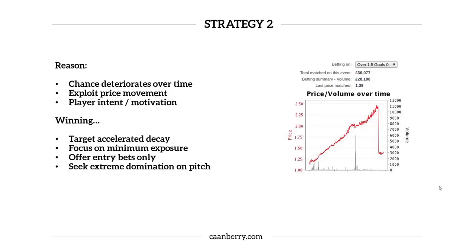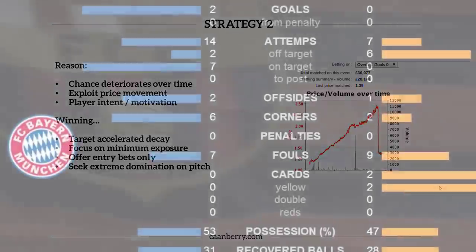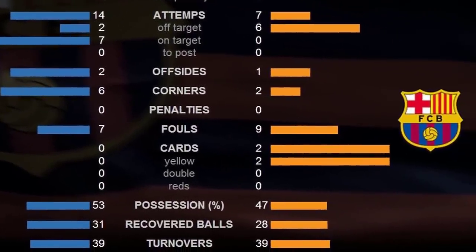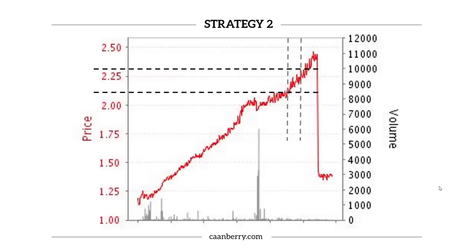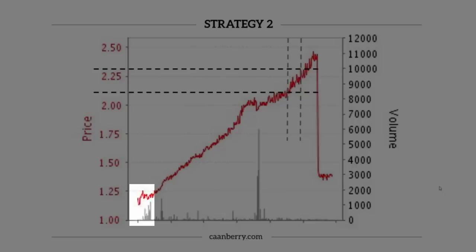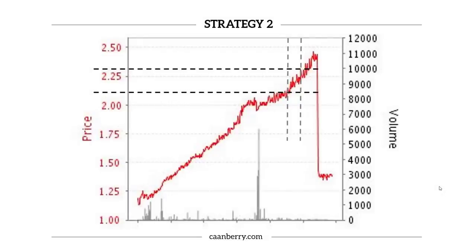Manage the downside and offer entry bets only at value prices, much like the previous strategy. Seek extreme domination on the pitch — look at things like expected goals, shots on and off target, and teams keeping the ball into the corners later in the match. Domination is what this strategy is all about. If there's domination on the pitch, then it's a safer environment to use this strategy. We don't want it to be competitive — competition is for losers in terms of betting, frankly.